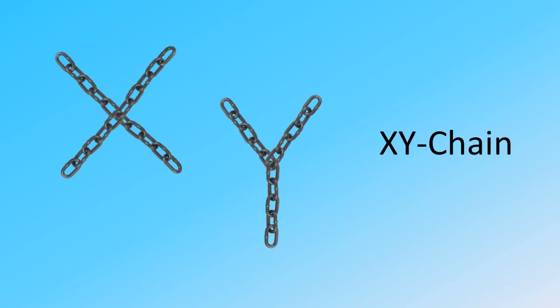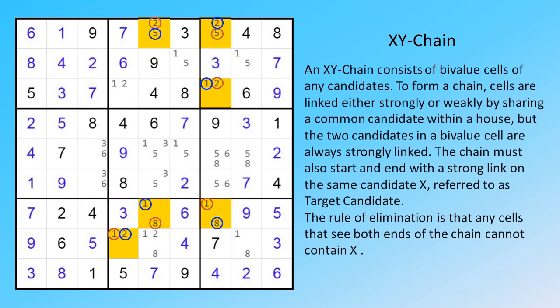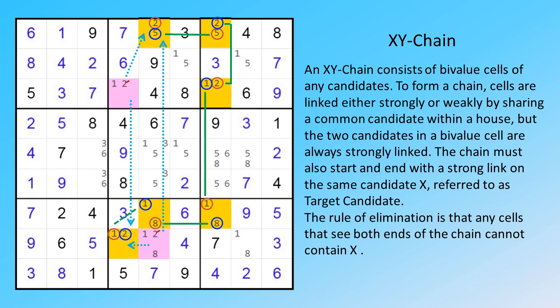X-Y Chain. An X-Y chain consists of bivalue cells of any candidates. To form a chain, cells are linked either strongly or weakly by sharing a common candidate within a house, but the two candidates in a bivalue cell are always strongly linked. The chain must also start and end with a strong link on the same candidate X, referred to as target candidate. The rule of elimination is that any cells that see both ends of the chain cannot contain X.